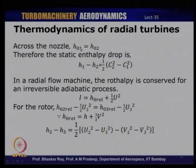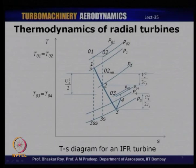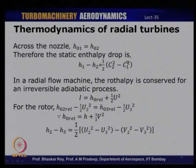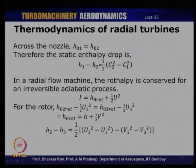We will analyze the flow as it passes through the turbine and derive equations for the radial flow turbine. Across the nozzle, H01 equals H02 — no change in stagnation enthalpy. The static enthalpy drop in the nozzle is H1 minus H2, equal to half of (C2² − C1²). In a radial flow machine, the rothalpy is conserved for an irreversible but adiabatic process. Rothalpy I equals H0 (stagnation enthalpy in relative frame) plus half U² (blade speed term).